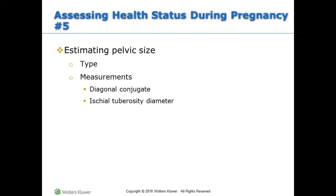Estimating pelvic size includes type and measurements: the diagonal conjugate and the ischial tuberosity diameter.